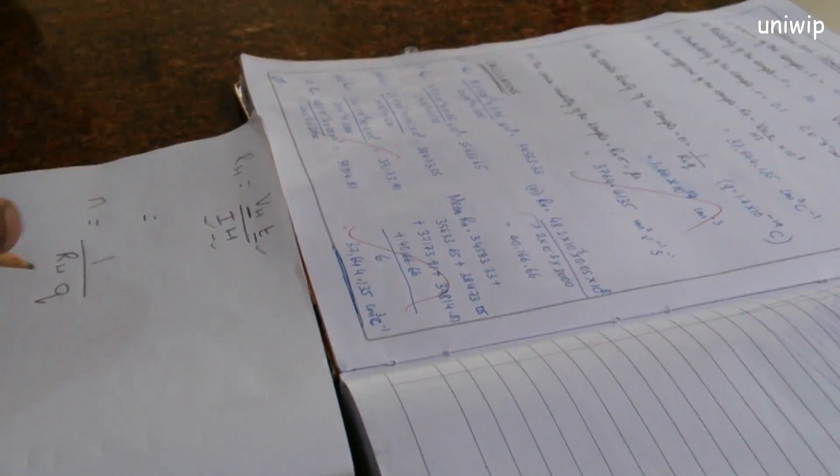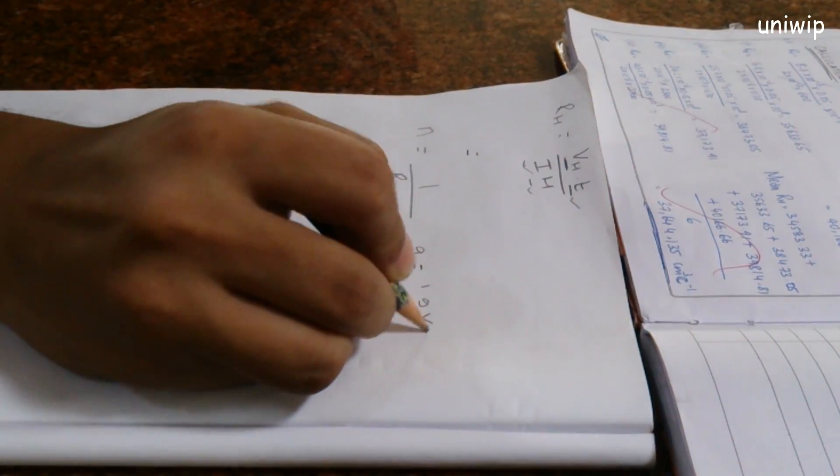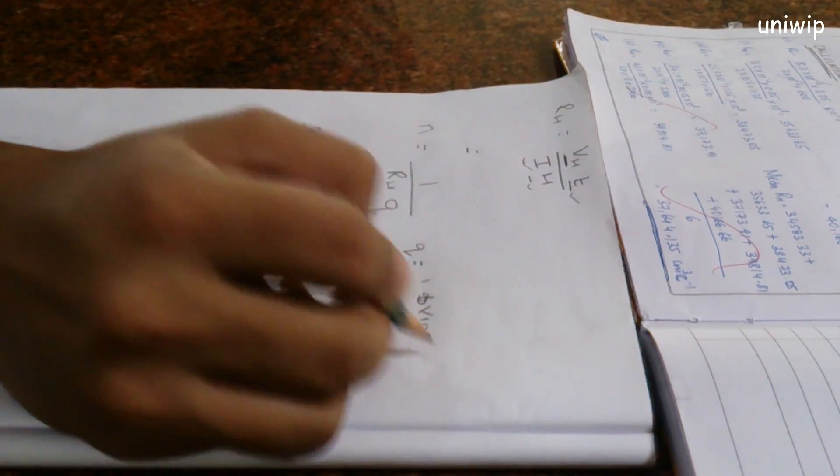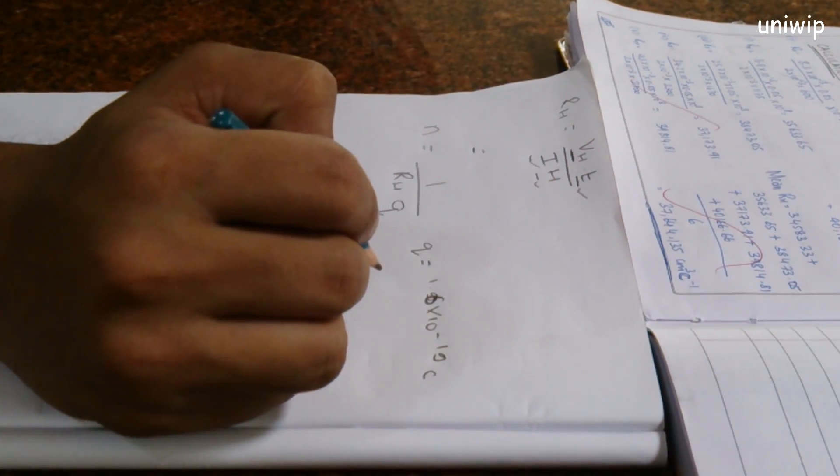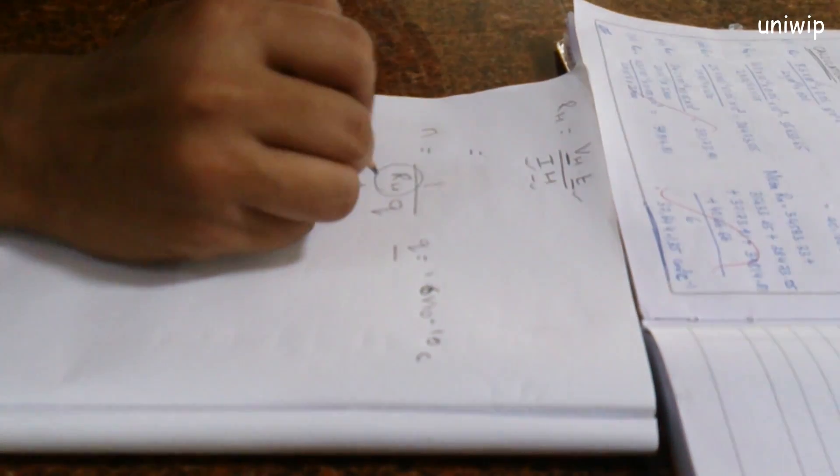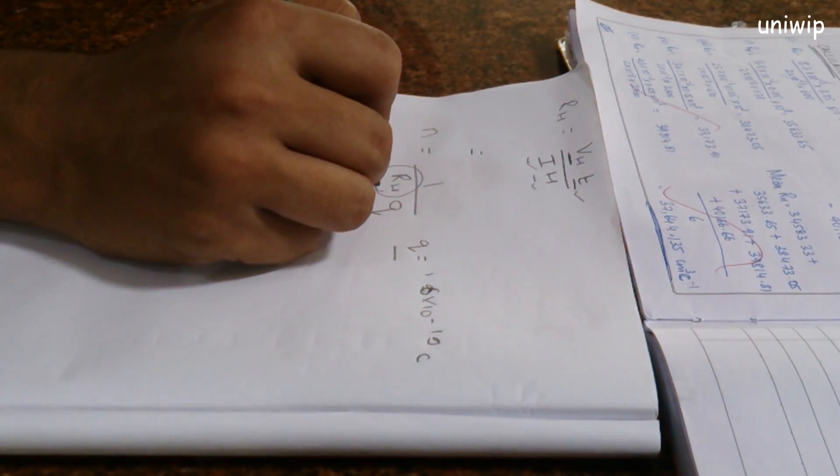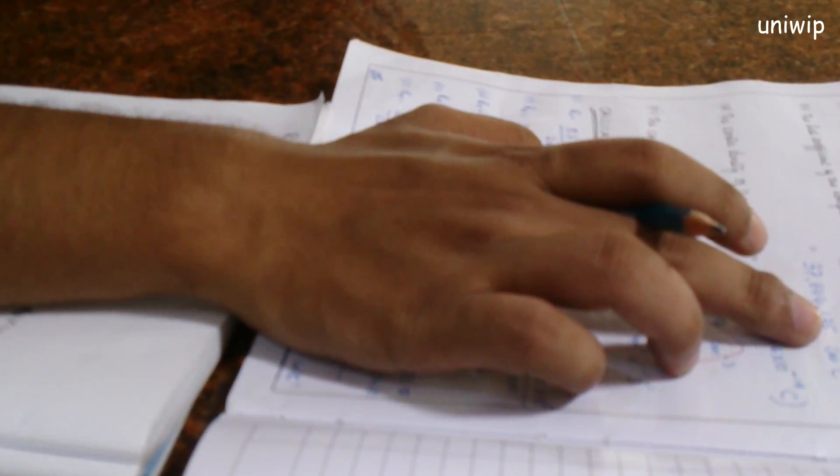I got the value of RH. The value of RH I'll be using is the mean value from the table. The mean value from the table over here. So I'm going to be calculating my charge density using this. N equals 1 divided by RH times Q, where Q is 1.6 times 10 to the power minus 19 coulombs.